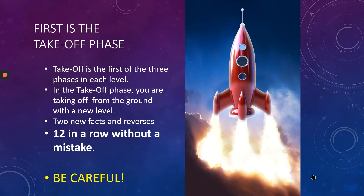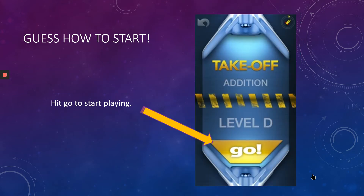The first phase in the game is the takeoff phase. Takeoff is where you're taking off from the ground with a new level — two new facts and their reverses. You have to do 12 in a row without a mistake. You don't have any others in there, just those two new facts and their reverses, but you've got to get through 12 in a row without a mistake, so be careful. To get started, hit the go button.